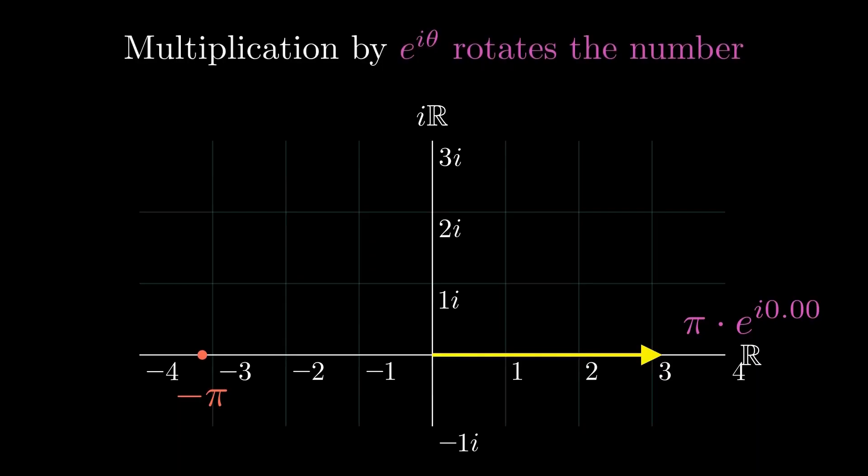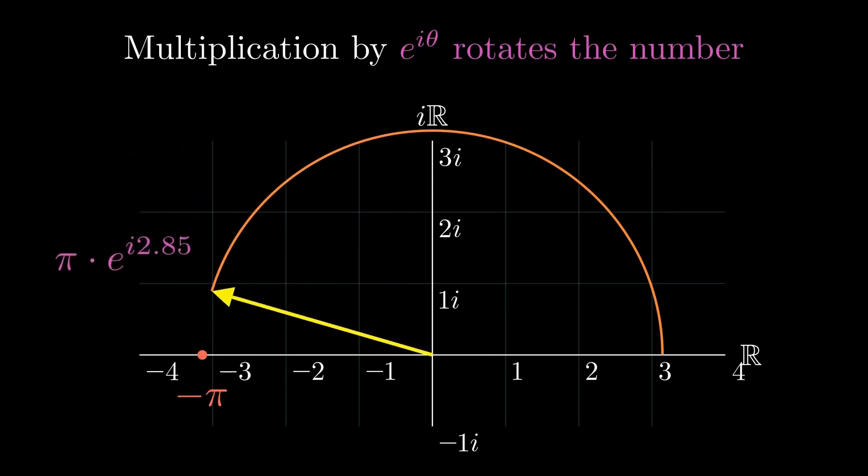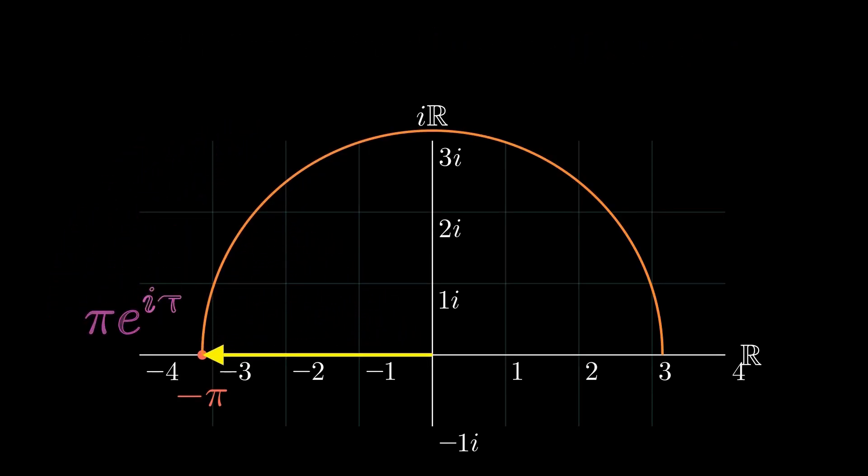Now, we apply the rotation. Multiplying by e to the power of i theta spins our number. We travel through the imaginary dimension, forming a perfect arc. We arrive at the destination. We have rotated exactly 180 degrees, or pi radians.